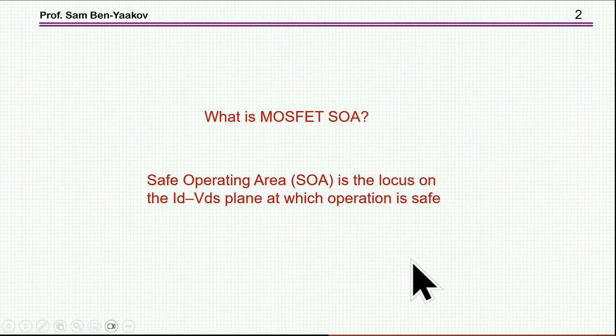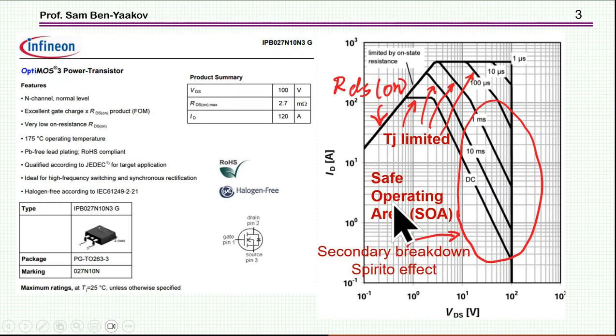So what is a MOSFET Safe Operating Area? The Safe Operating Area is the locus, the place on a plane of drain current and VDS voltage at which operation is safe. And here is a way that manufacturers are giving this information.